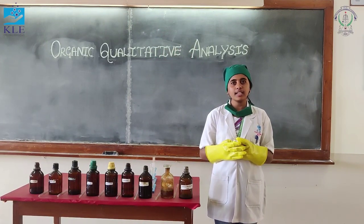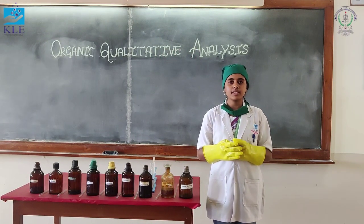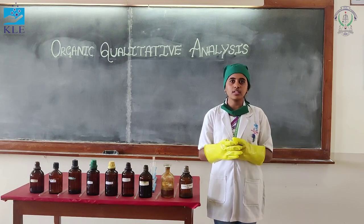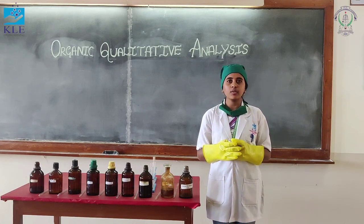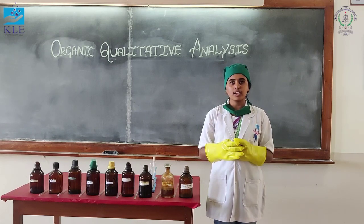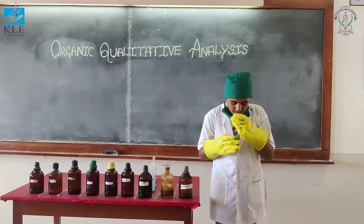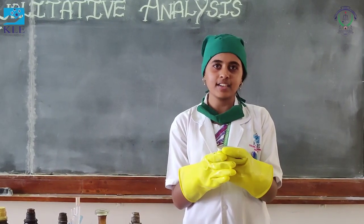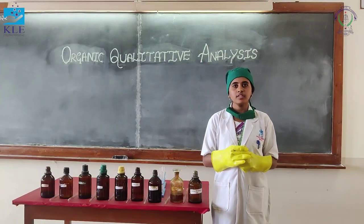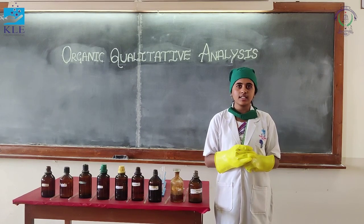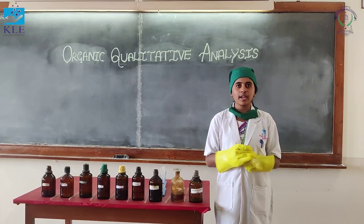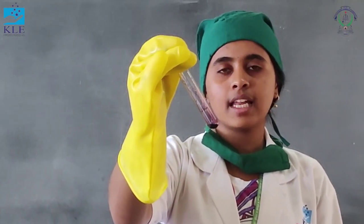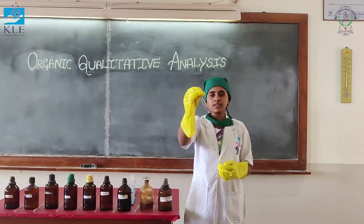Now let us perform the confirmatory test for acids by esterification. Take the substance, add alcohol and a few drops of concentrated H2SO4. Pour this solution into a china dish containing water or water with Na2CO3. A fruity odor is produced due to ester formation, confirming the presence of an acid. Next, take the substance and add alcoholic FeCl3 — alcoholic ferric chloride — to it. A violet color is produced, which confirms that it is salicylic acid, also known as a phenolic acid.